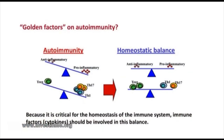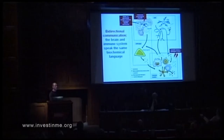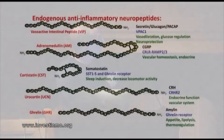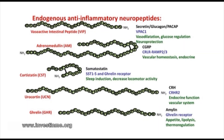Our immune system is exposed to our brain's responses — for example, glucocorticoids, one of the most important anti-inflammatory factors. The important thing is that both systems speak the same biochemical language: neuropeptides. These neuropeptides are produced by neurons, but we have discovered that immune cells can also produce neuropeptides and have receptors for them. This is the list of neuropeptides we have characterized in our lab — including vasoactive intestinal peptide (VIP), which was presented this morning, along with others with similar properties but belonging to different families, acting through different receptors.